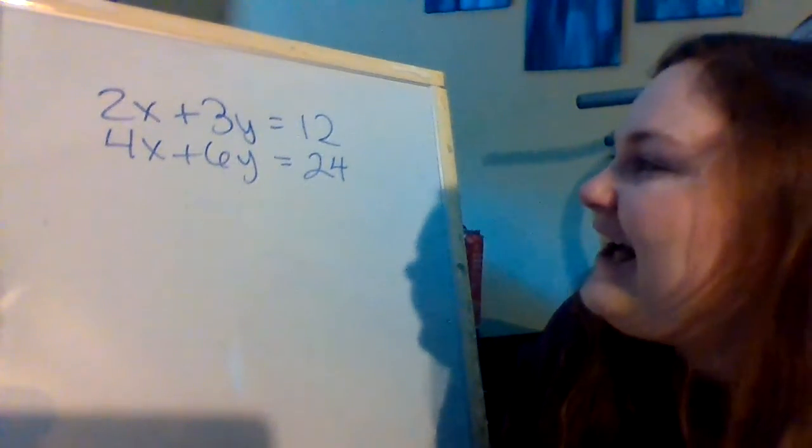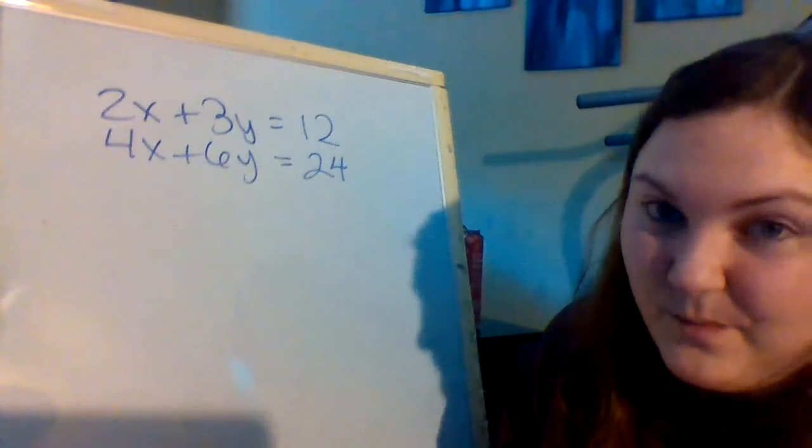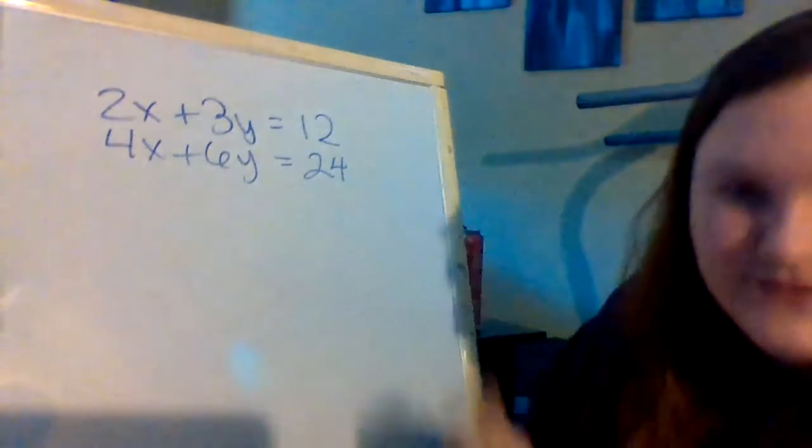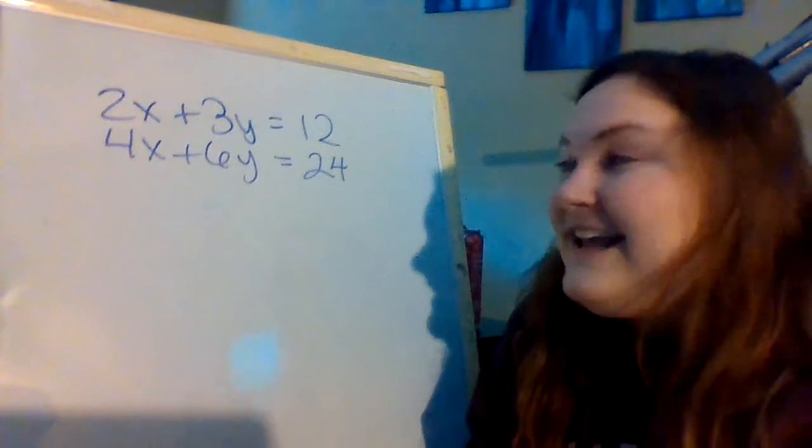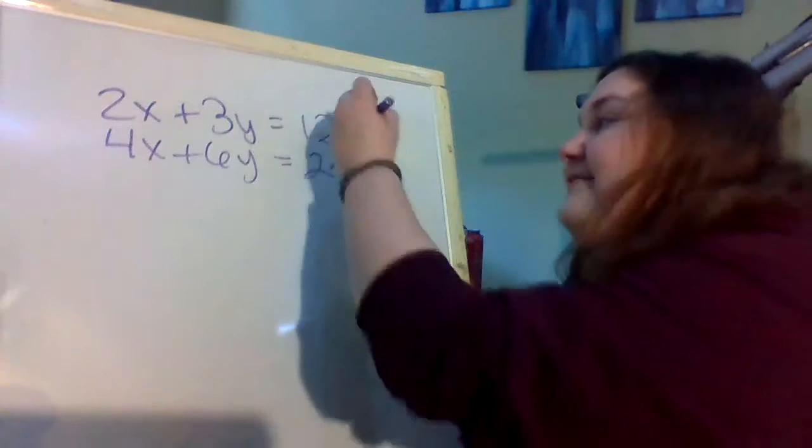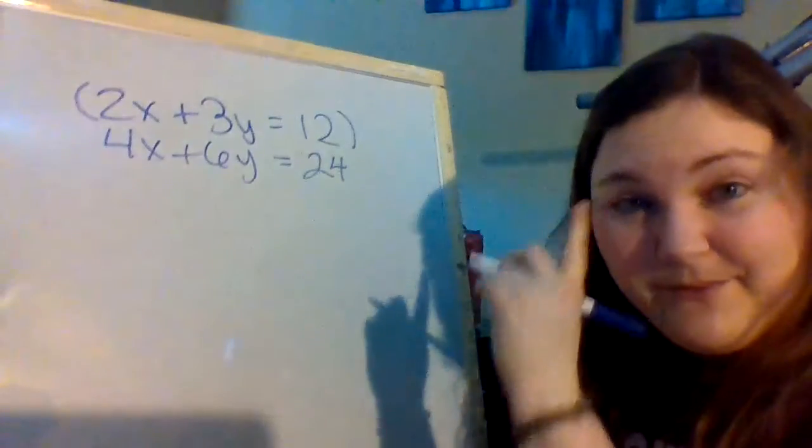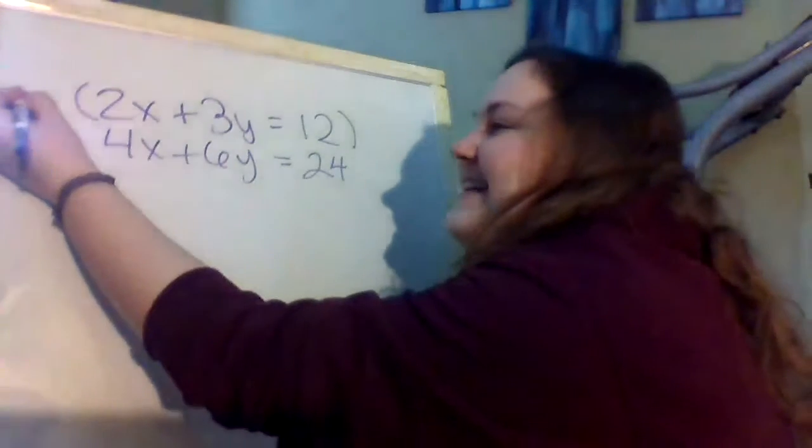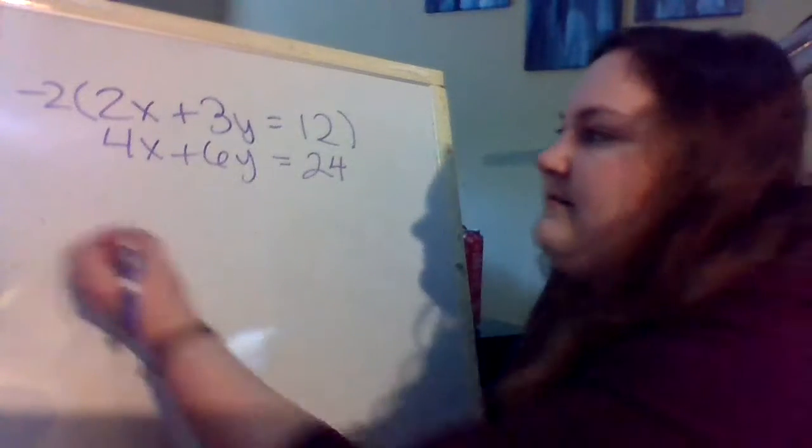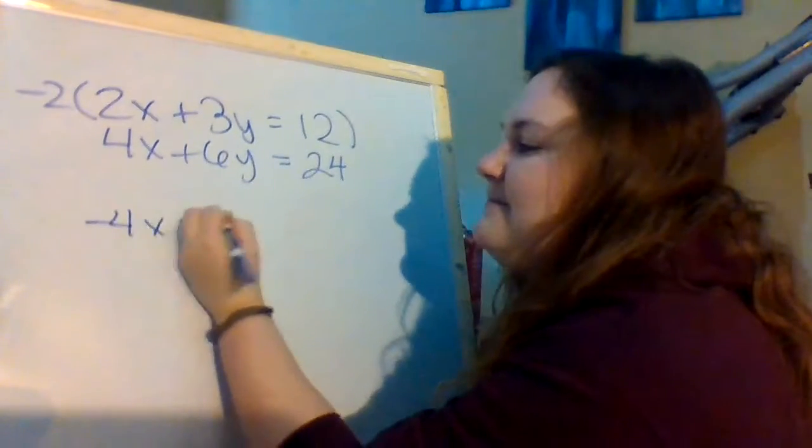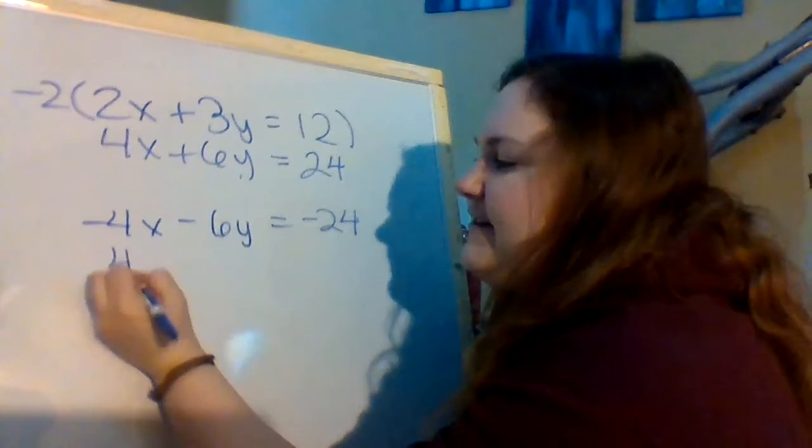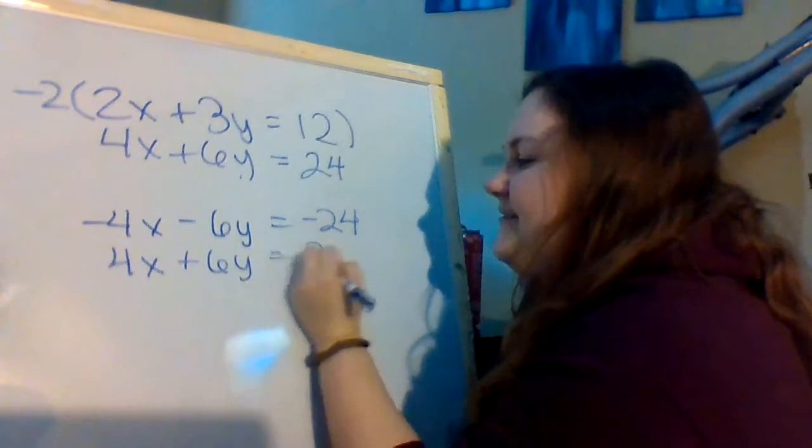Okay, looking at this system, again it's going to be elimination we want to use because we don't have a graph and we don't have x equals or y equals. We've got our x's, our y's, and then equals to a number. Looking at this system here, it is not necessary to multiply both equations. If I wanted to eliminate my x's, all I have to do is multiply my first equation. Do you know what we would multiply it by? We'd multiply it by negative 2. That way I get a positive 4 and then a negative 4 here. Now when we do that, that's going to give me negative 4x minus 6y equals negative 24. And then I'm just going to copy my second equation down here. 4x plus 6y equals 24.